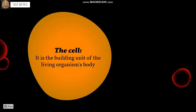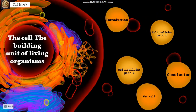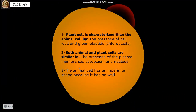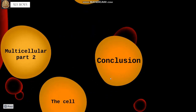We can conclude that the cell is the building unit of a living organism's body. The plant cell is distinguished from the animal cell by the presence of a cell wall and chloroplasts, which the animal cell lacks. Both cells share plasma membrane, cytoplasm, and nucleus. The animal cell has an indefinite shape because it has no cell wall.